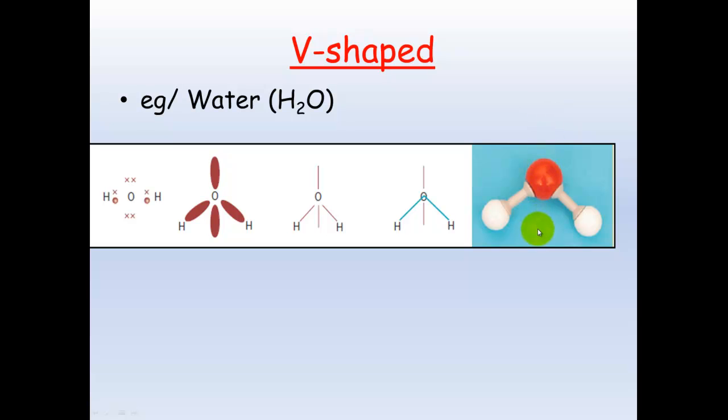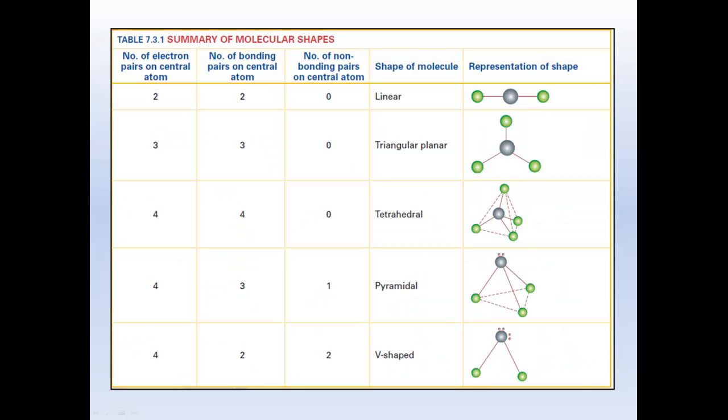Here you'll see this v-shape. The non-bonding pairs would be here and are crucial in forming the v-shape of the molecule. Here's the summary: you've got your linear, which is in a straight line, your triangular planar, which are flat on the ground.